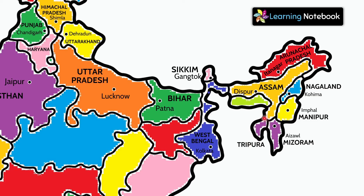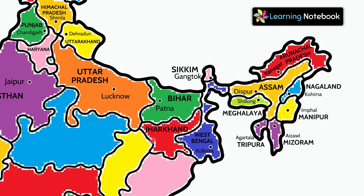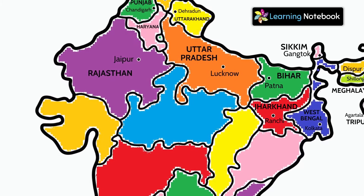Now this Indian state is Tripura and its capital is Agartala. Now here we have Meghalaya and its capital is Shillong. This state is Jharkhand and its capital is Ranchi.